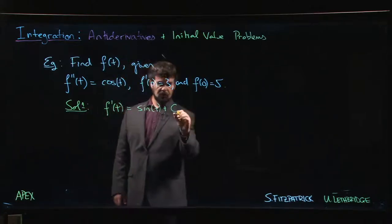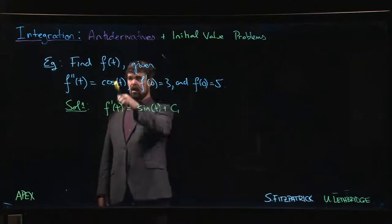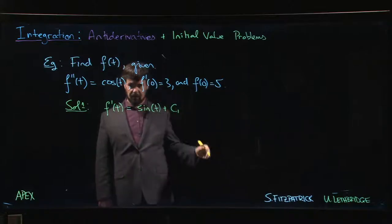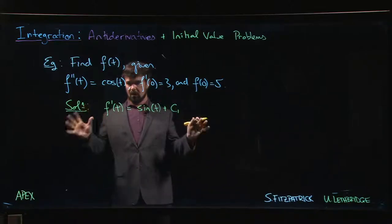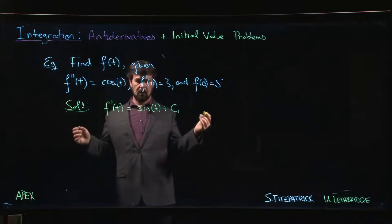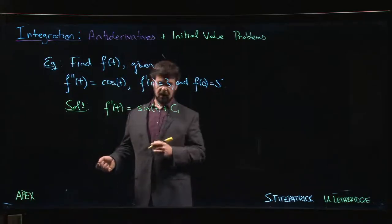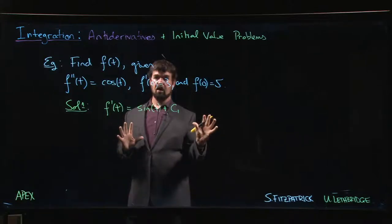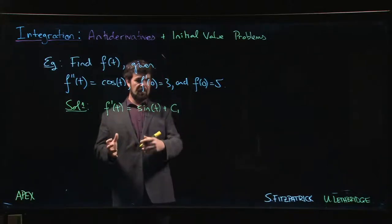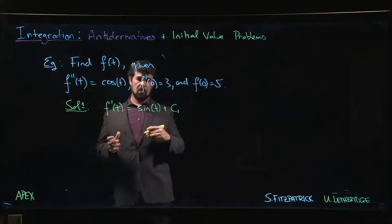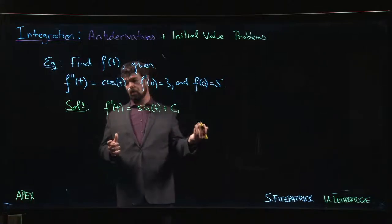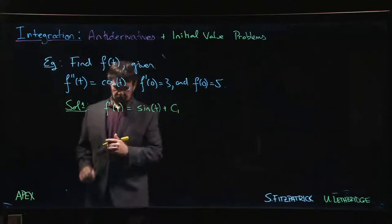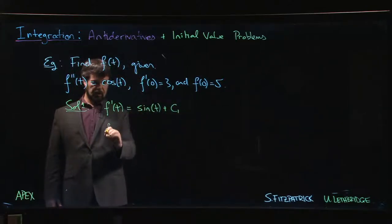Now I'm going to call this constant c1 because by the time I get to f of t, I'm going to have to take the antiderivative again and there's going to be a second constant of integration. We want to give them different names because they're probably going to be different numbers. So we get to here. Now, there's two choices on how you proceed. You can go straight to f of t and then put in the values or you can put in the values as you go. Most people like to solve as we go, but let's do it the other way first. So then we say, okay, let's do the antiderivative again.